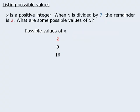Now here comes a very important observation. Notice that 9 can be expressed as 2, the remainder, plus 7, the divisor. Similarly, 16 can be expressed as 2 plus 7 plus 7. So to find other possible values of x, we'll keep adding 7 to the previous value. And so on.